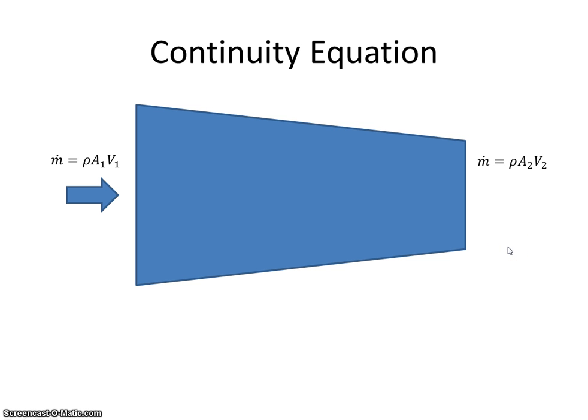So there's the air coming in. As we can see, the cross-sectional area here is much larger than the cross-sectional area here. And let's assume that there's no change in the density of the air. Let's say that the density has remained constant.